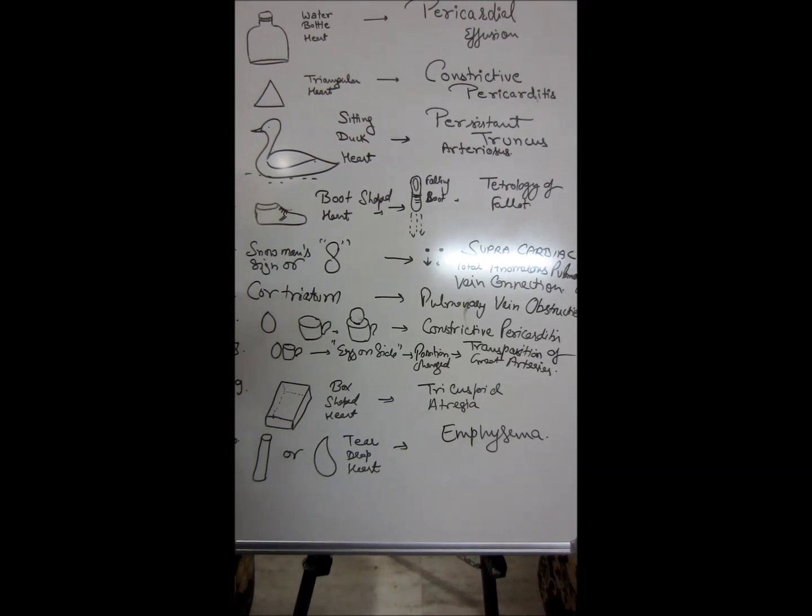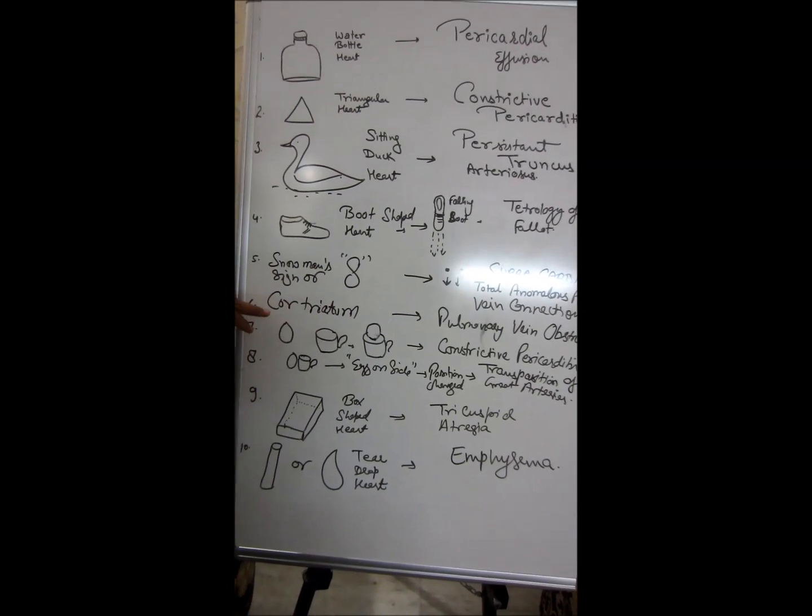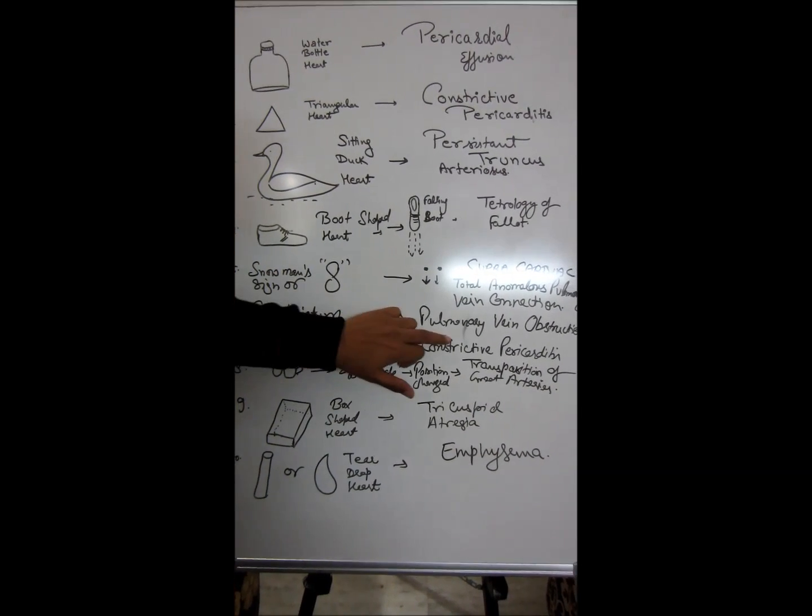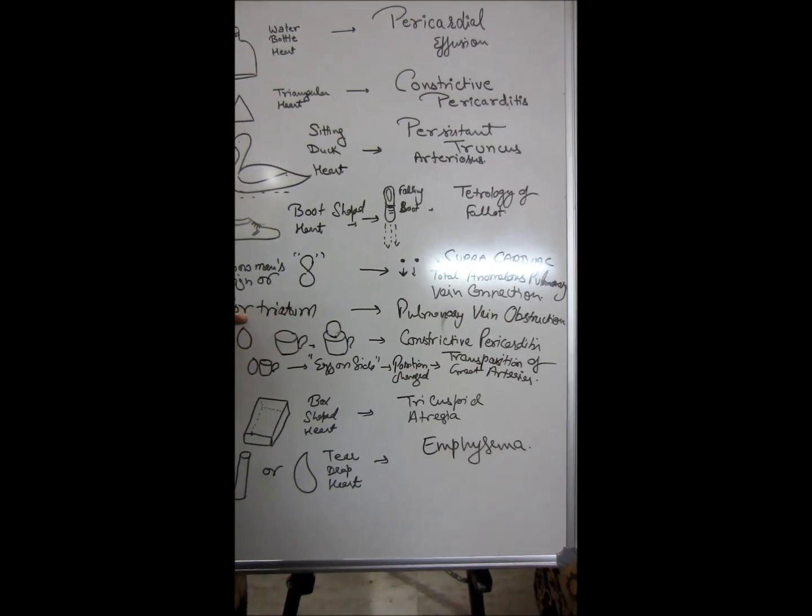As you remember a condition known as cor pulmonale, so associate it. Cor triatrium is seen in pulmonary vein obstruction - cor pulmonale, cor triatrium, pulmonary vein obstruction.